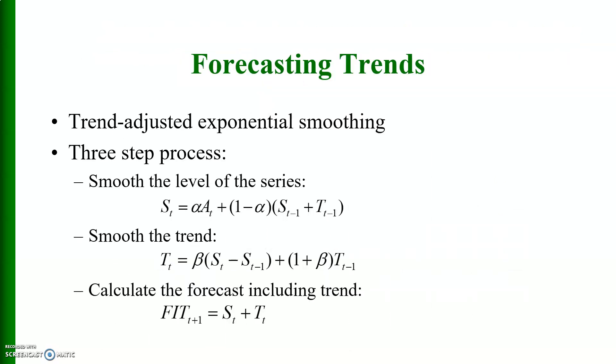Forecasting trends: trend-adjusted exponential smoothing is a three-step process. Smooth the level of the series, smooth the trend, and calculate the forecast. The forecast including trend: F_{t+1} is equal to S_t plus T_t.